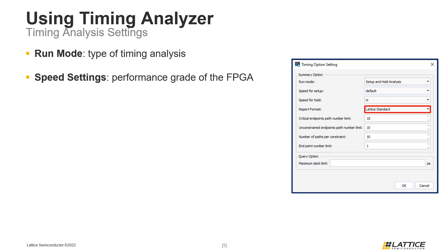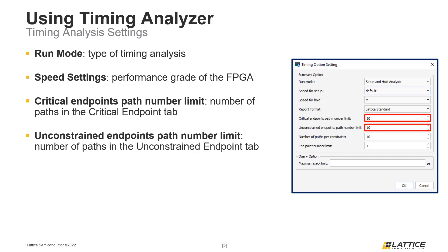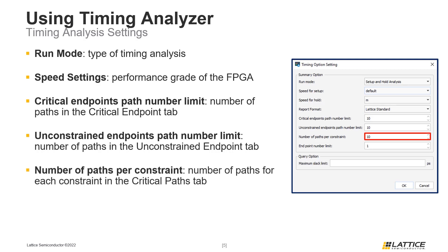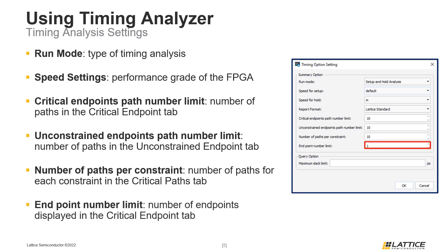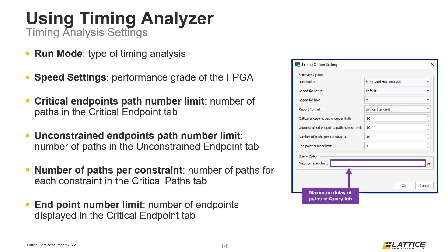The next few settings control how some of Timing Analyzer's additional tabs function, which will be covered later in the video. The Critical and Unconstrained Endpoints Path Number Limit settings control the number of paths reported in the Critical Endpoint Summary and Unconstrained Endpoint Summary tabs. The Number of Paths Per Constraint setting controls the number of paths reported in the Critical and Unconstrained Paths Summary tabs. The Endpoint Number Limit controls the number of critical path endpoints reported in the Critical Endpoint tab. Finally, the Maximum Slack Limit option controls the maximum delay for paths that are reported in the Query tab.